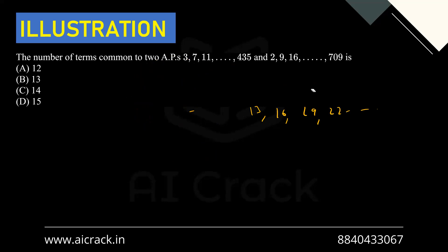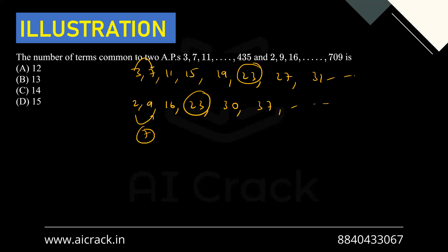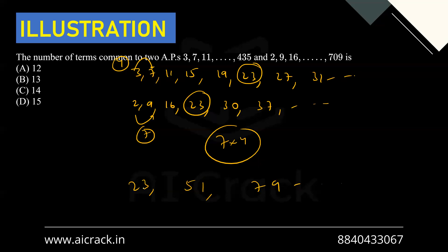Applying this concept: AP1 is 3, 7, 11, 15, 19, 23, 27, 31... (d=4) and AP2 is 2, 9, 16, 23, 30, 37... (d=7). The first common term is 23. The common difference of the new AP formed by common terms is LCM(4, 7) = 28. So the common terms form an AP: 23, 51, 79, ... with a = 23 and d = 28.